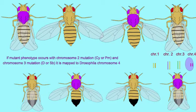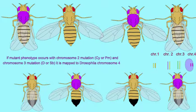Likewise, if one were trying to map a mutation which affected eye color, then plum would not be the most appropriate cross to use.